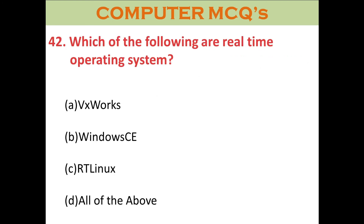Question forty-two: Which of the following are real-time operating systems? A. VxWorks. B. Windows CE. C. RT Linux. D. All of the above. The right answer is all of the above.